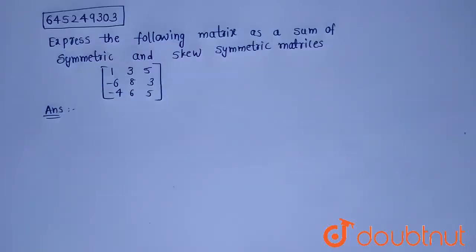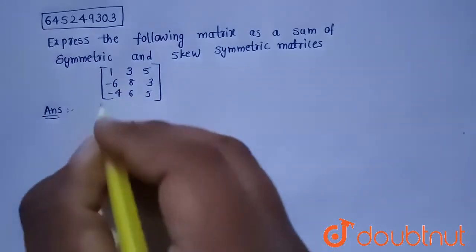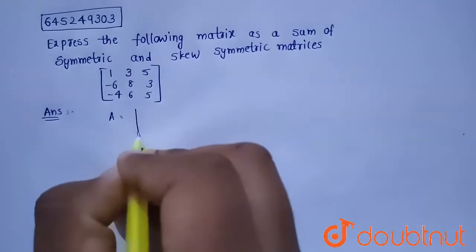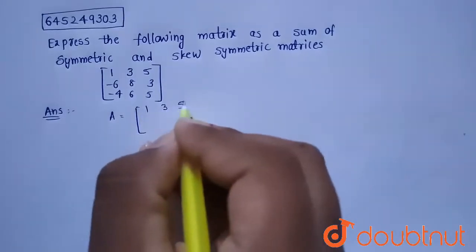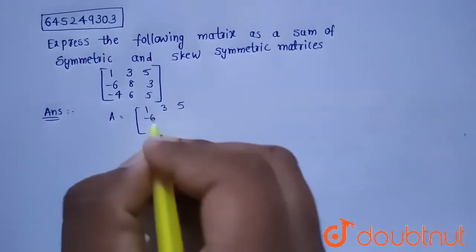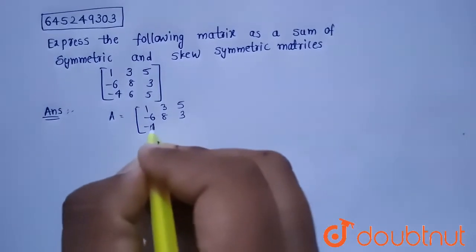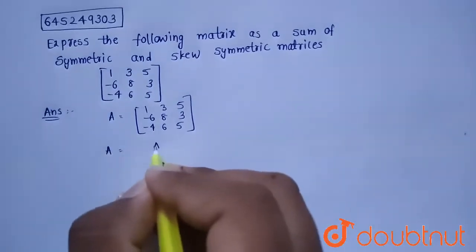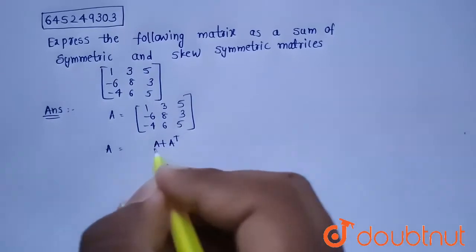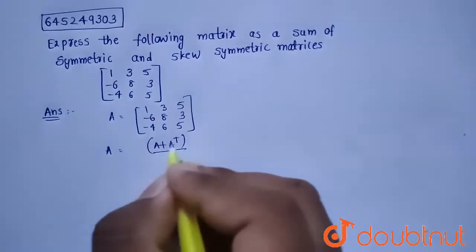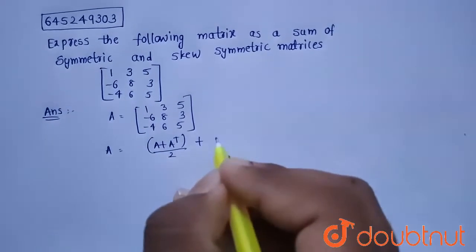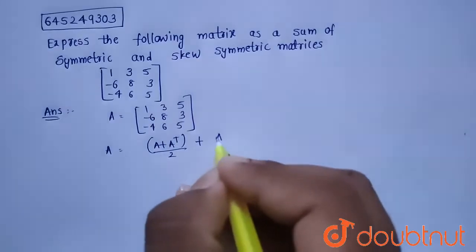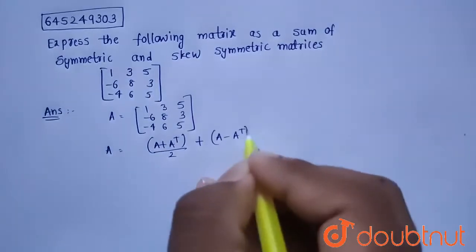Hello everyone. Today's question is: express the following matrix as a sum of symmetric and skew-symmetric matrices. So, given matrix A equals [1, 3, 5; -6, 8, 3; -4, 6, 5]. We know that a matrix A can be written as a sum of a symmetric matrix (A + A^T)/2 and a skew-symmetric matrix (A - A^T)/2.